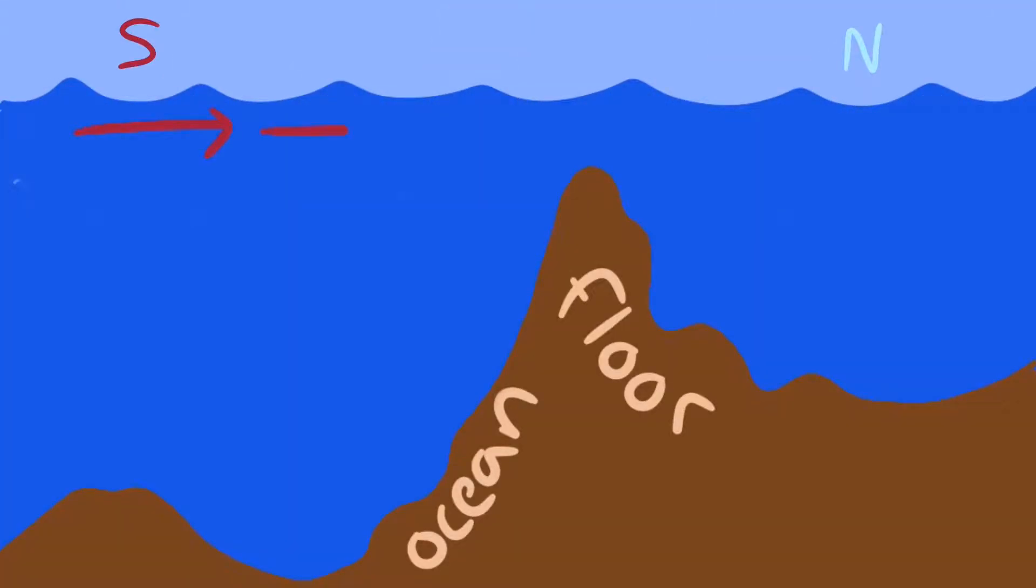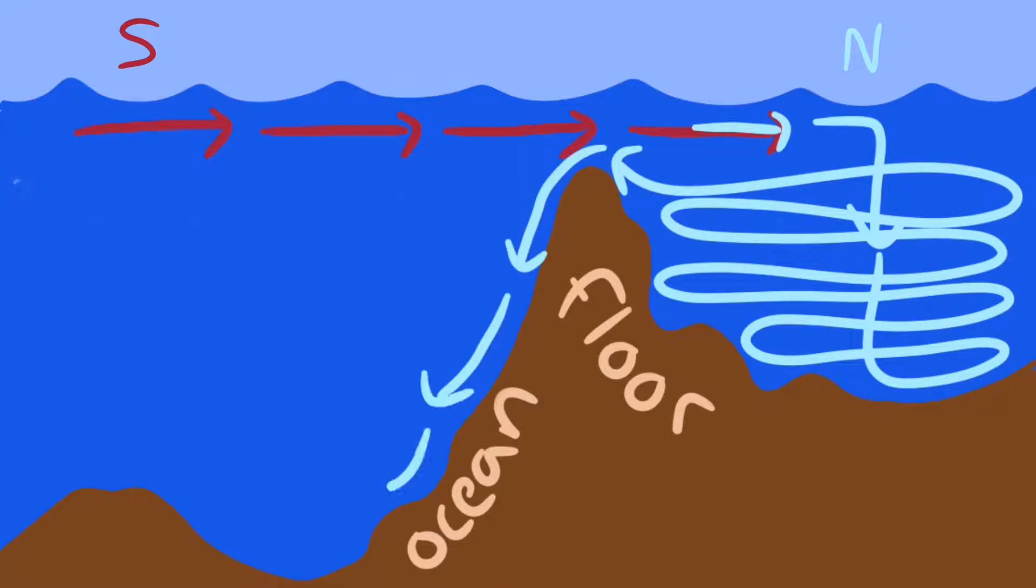Warm surface waters from the south travel north and then get cold and sink. The sea floor in the Denmark Strait channels all that sinking water into an enormous waterfall.